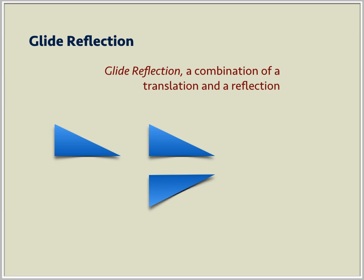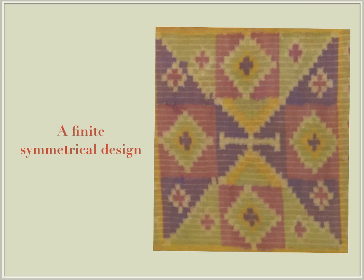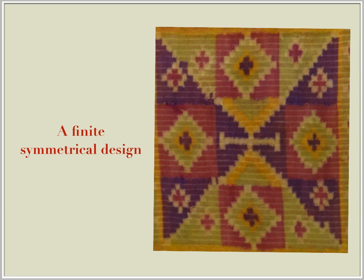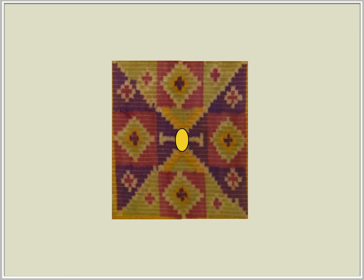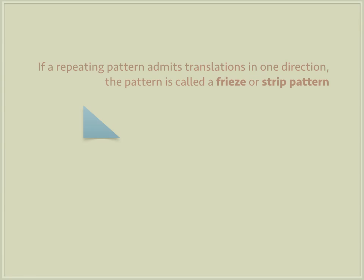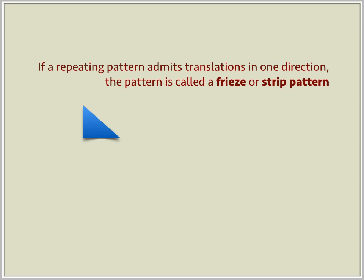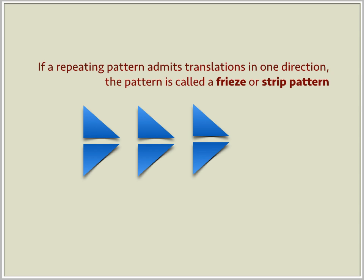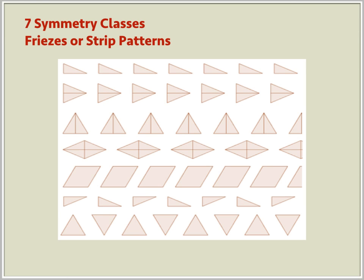For planar patterns, three possibilities occur on how a motif is repeated by either one or a combination of these four symmetries. A finite symmetrical design is obtained by repetition of a motif using a center point, either using only rotations about the center or reflections about axes through the center. If a repeating pattern admits translations in one direction, the pattern is called a frieze or strip pattern. There are altogether seven symmetry classes of friezes or strip patterns.